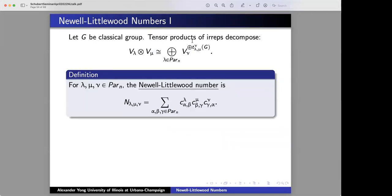Now, here comes the definition. This definition demands absolutely nothing about representation theory. It is just a combinatorial definition. I'm given three partitions lambda mu nu, and I'm going to define numbers N_lambda_mu_nu